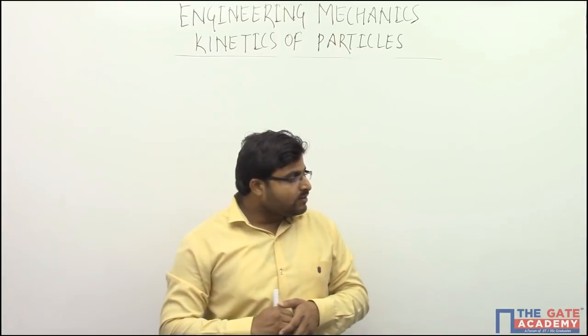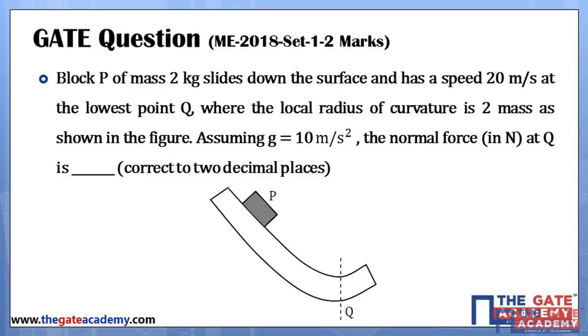As you can see in the slide, block P of mass 2 kg slides down the surface and has a speed of 20 meter per second at the lowest point Q, where the local radius of curvature is 2 meter as shown in the figure. Assume g is equal to 10 meter per second square. The normal force in Newton at Q is what we need to find.